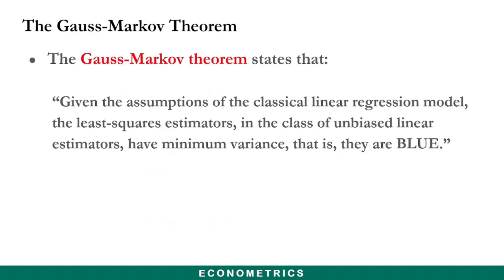Generally, the Gauss-Markov theorem states that, given the assumptions of the classical linear regression model, the least squares estimators in the class of unbiased linear estimators have minimum variance. That is, they are BLUE.